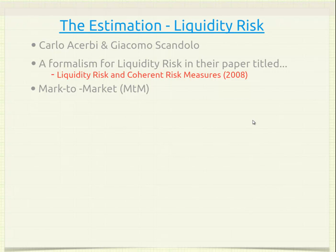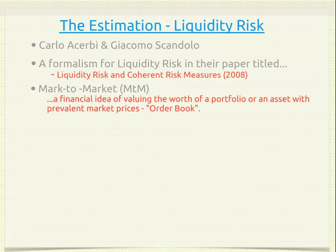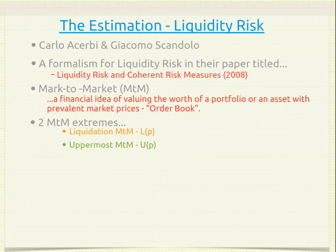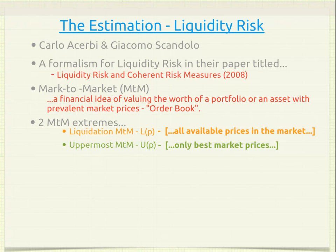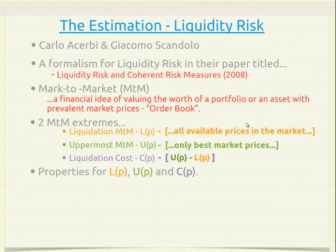This paper, titled 'Liquidity Risk and Coherent Risk Measures' (2008), employed the idea of mark-to-market — a financial concept of valuing a portfolio or asset using prevailing market prices. Two extremes of this idea are: the Liquidation Mark-to-Market (LP), which values a portfolio using all available prices in the market; and the Uppermost Mark-to-Market (UP), which values the portfolio using only the best (topmost) market prices. Liquidation cost C is defined as U minus L, the difference between these two. The properties of L, U, and C are given accordingly.